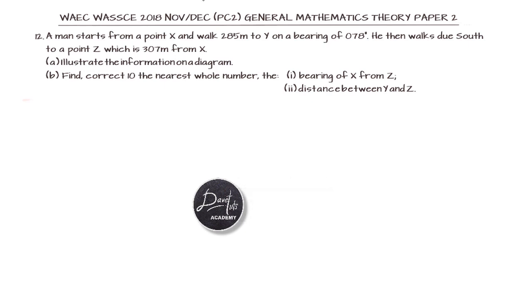We have this question on bearing. We are told that a man starts from point X and walks 285 meters to Y on a bearing of 078 degrees, and then walks due south to point Z, which is 307 meters from X. We have to illustrate this information on a diagram.